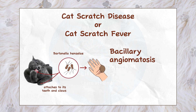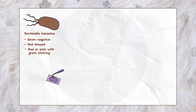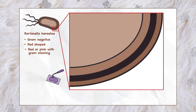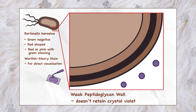Bacillary angiomatosis is a severe type of cat scratch disease that occurs largely in immunocompromised patients. Bartonella henselae is a gram-negative bacillus, meaning it is a rod-shaped bacteria that stains red or pink with gram staining. This is mostly owing to Bartonella henselae's weak peptidoglycan wall, which does not absorb crystal violet dye during gram staining. However, it does not always gram stain; thus, the silver nitrate-based Warthin-Starry stain is needed for direct observation.